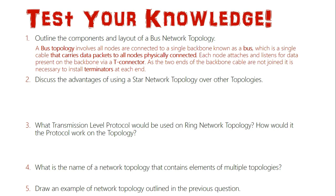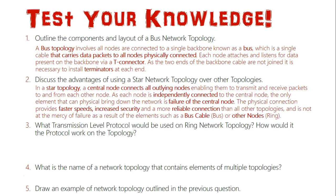Question two: discuss the advantages of using a star network topology over other topologies. In a star topology, a central node — such as a switch or router — connects all other nodes to it. Whenever data is sent, it goes directly from the sender to the central node and then to the destination, so every node has its own independent connection. The only element that could bring down the whole network is the central node failing.